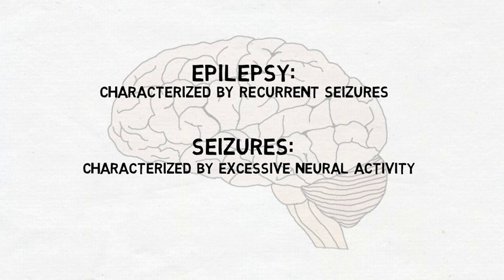Seizures can look drastically different depending on the patient, ranging from a brief and subtle interruption in consciousness to violent convulsions. One characteristic seizures have in common, however, is excessive neural activity.